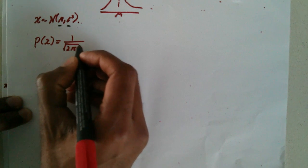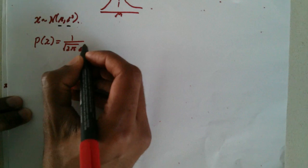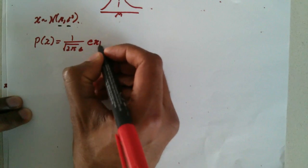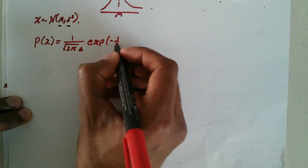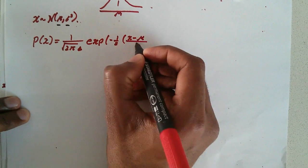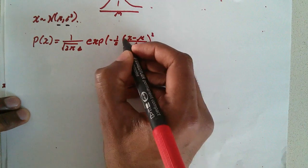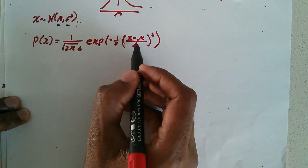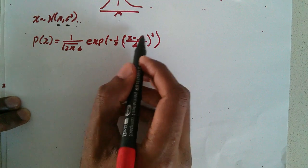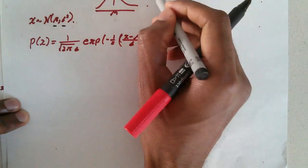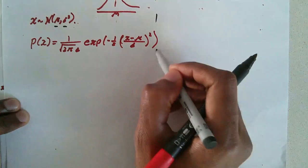I'm going to write sigma — some people prefer to write sigma squared underneath the square root sign, but I prefer to write sigma out front and then inside the exponent as well, with x minus mean over the standard deviation, all squared. Alright, so we've set out the basics, let's go ahead and start integrating.